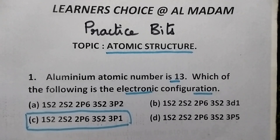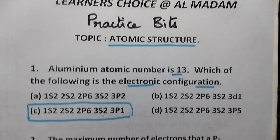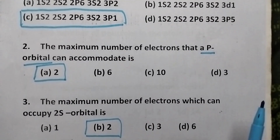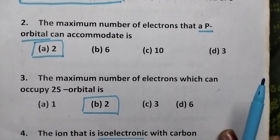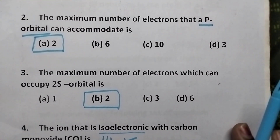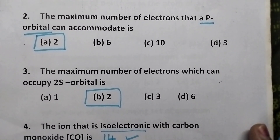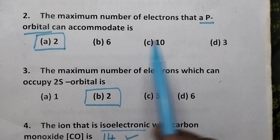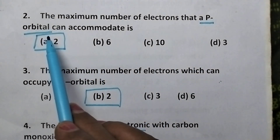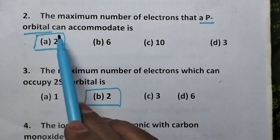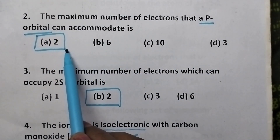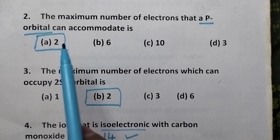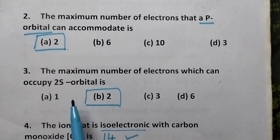So option C is the right answer. The maximum number of electrons that a p orbital can accommodate is — any orbital can accommodate maximum 2 electrons. So option A is the right answer.